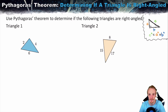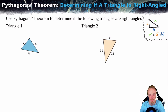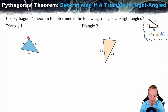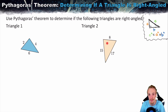Another thing that Pythagoras theorem can be used for is to determine whether or not a triangle is actually right-angled. If you're given this in a test, the diagrams are probably not going to be to scale. They're just going to give you a triangle and ask whether it's right-angled, and it may or may not look right-angled at all. This is really important to note.